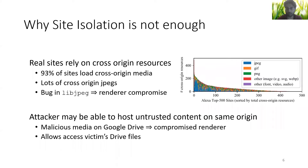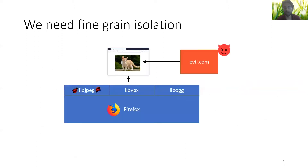Even on sites that don't load cross-origin resources, an attacker could find a way to host a malicious media file on the same origin. For example, by sharing a malicious media file on Google Drive, an attacker could compromise the renderer process, which in turn permits access to the victim's Google Drive files. What we're seeing is that untrusted media content can be used to compromise the renderer by exploiting bugs in libraries like libjpeg.